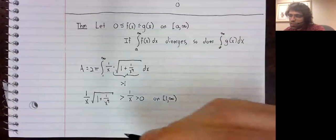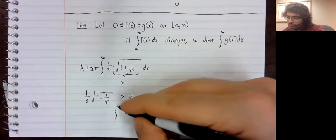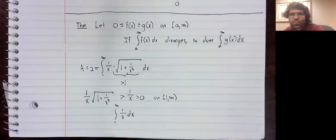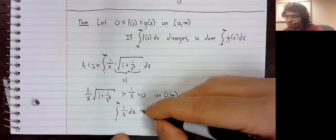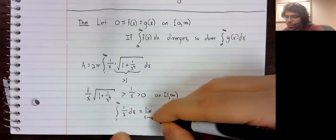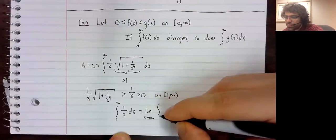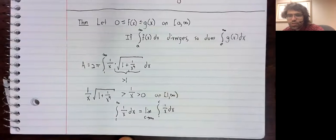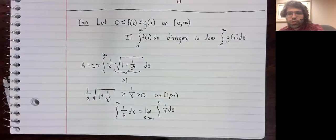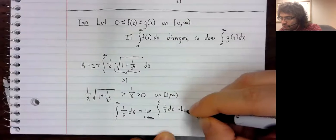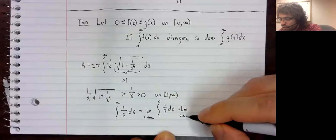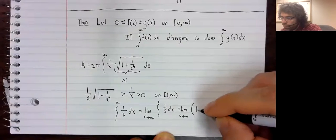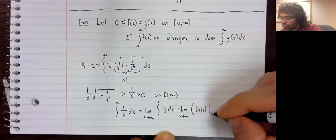Let's see whether the integral from one to infinity of one over x happens to diverge. Well, we'll rewrite this according to our definition of an improper integral.